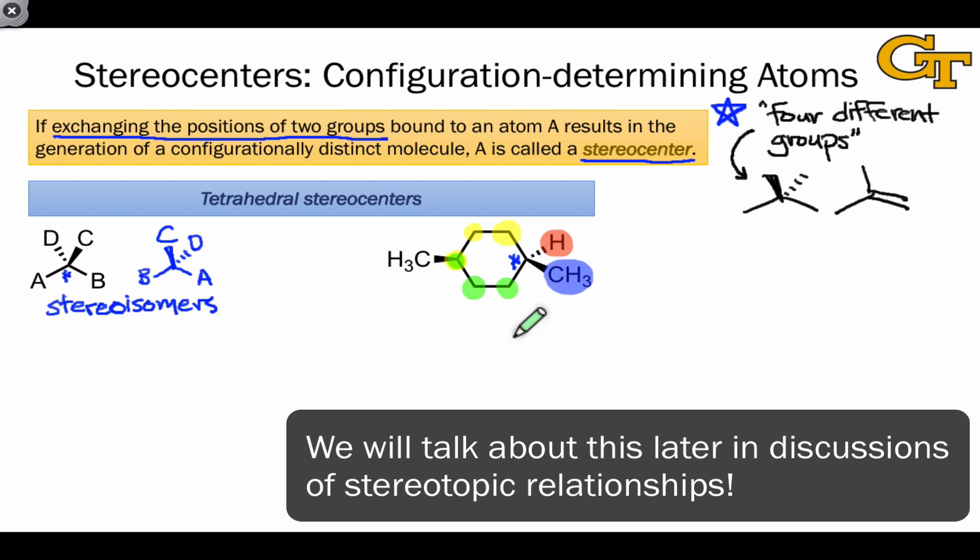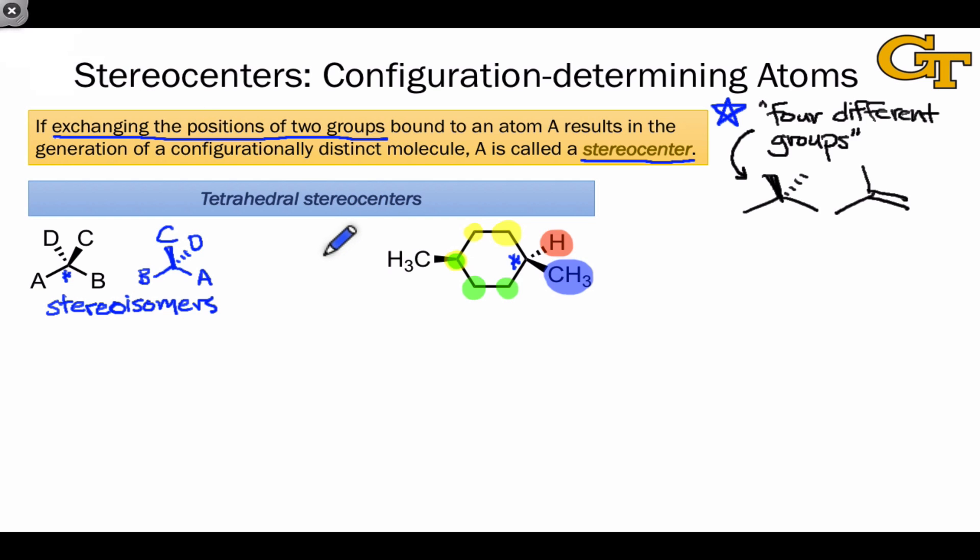Although we wouldn't know this without a subtle appreciation for how the two carbon chains on either side of the ring are different stereochemically, and so it doesn't really look like an atom bearing four different groups. Of course, to verify rigorously that the starred carbon is actually a stereocenter,